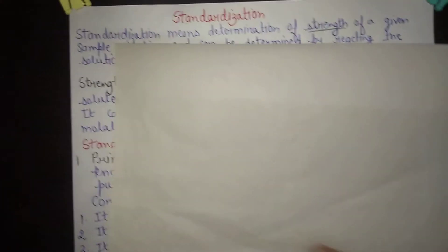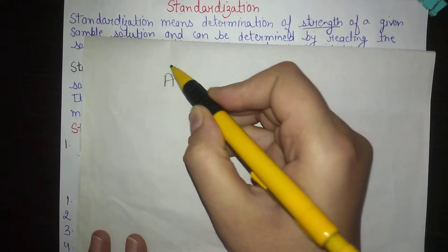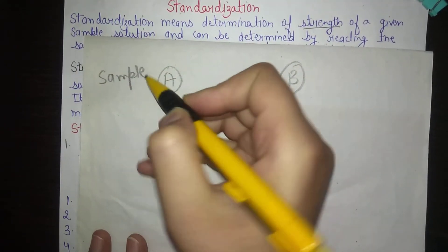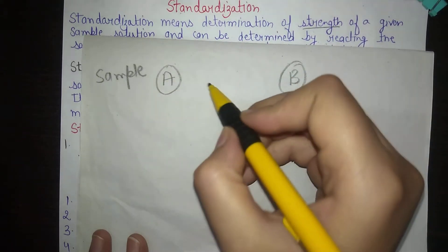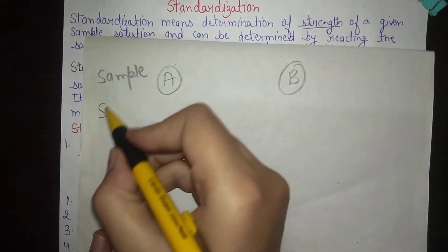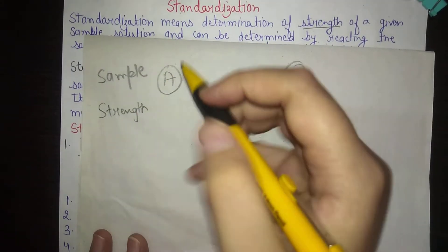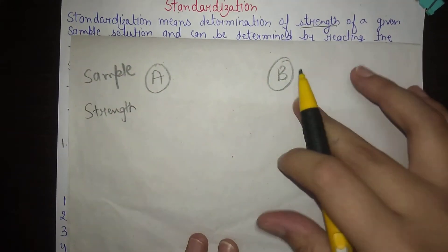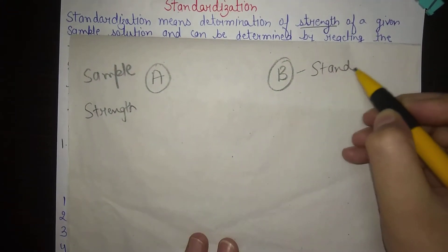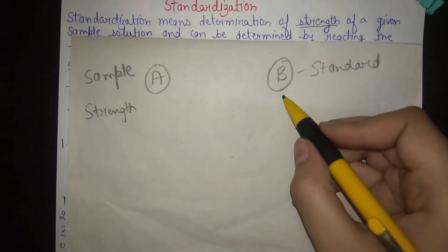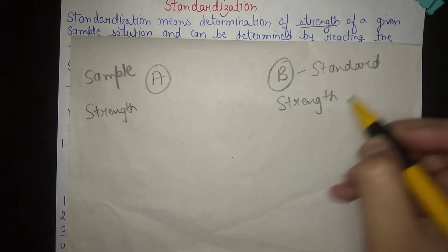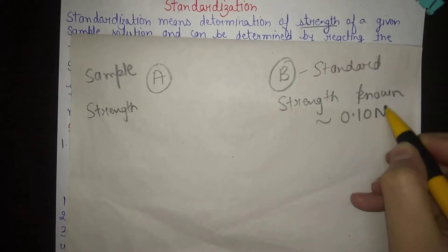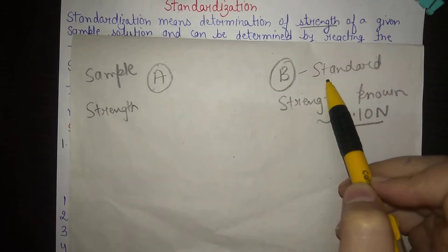Let's take an example. There is a solution A, which is our sample, and solution B. We need to standardize the sample, meaning we need to determine its strength. Solution B is a standard solution, meaning we already know its strength. Let's say its strength is 0.10 N.